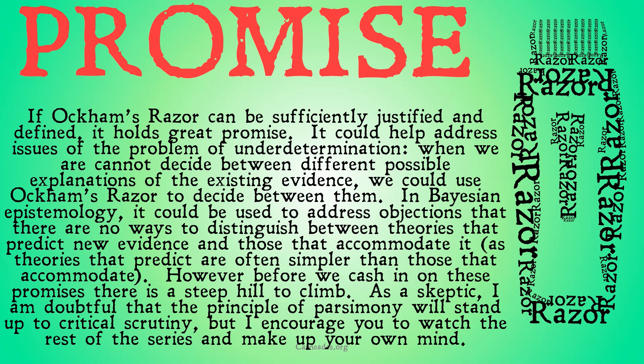If Occam's Razor can be sufficiently justified and defined, it holds great promise. It could help us address issues of the problem of underdetermination — when we cannot decide between different possible explanations of existing evidence, we could use Occam's Razor to decide between them. In Bayesian epistemology, it could be used to address objections that there are no ways to distinguish between theories that predict new evidence and those that accommodate it, as theories that predict are often simpler than those that accommodate.